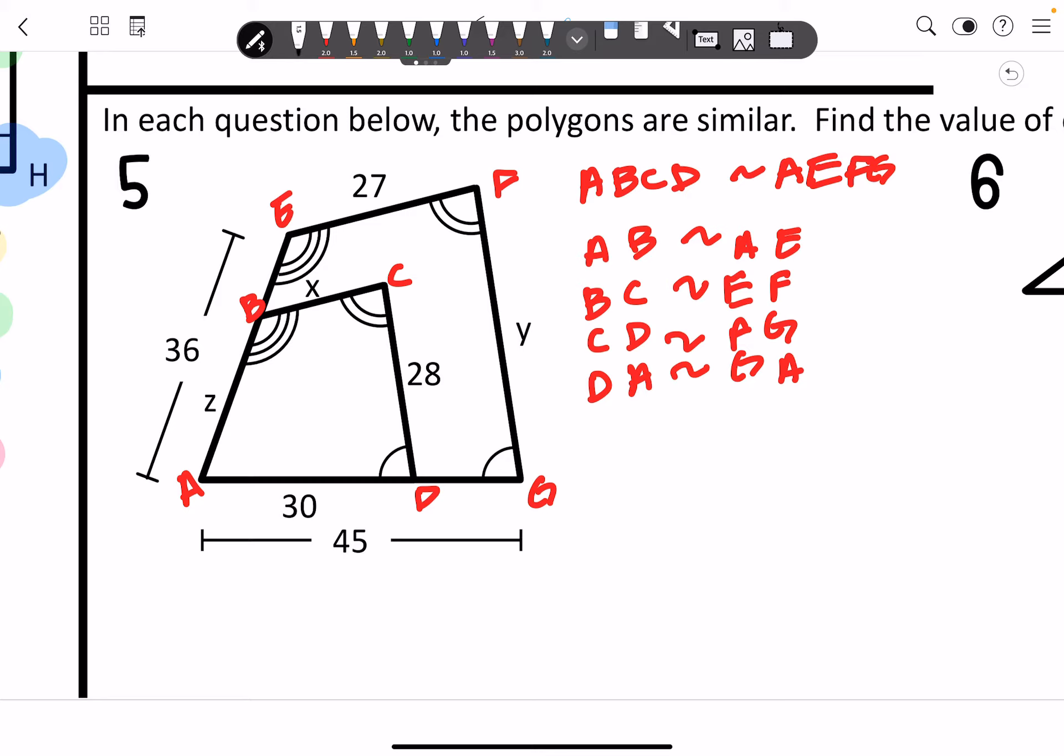Alright. So I'm going to try to figure out what all it is that I'm missing. So AB is Z. And it's similar to AE which is 36. Okay.